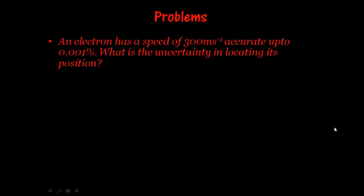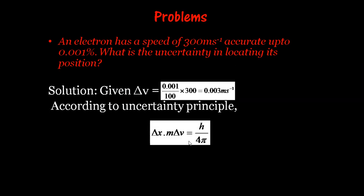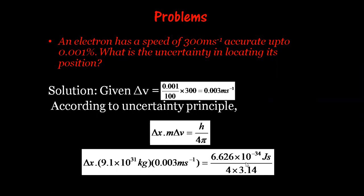Let us solve some problems based on the uncertainty principle. Problem 1: An electron has a speed of 300 m/s accurate up to 0.001%. What is the uncertainty in locating its position? Solution: ΔV = 0.001% of 300 m/s = 0.003 m/s. According to the uncertainty principle, Δx · m·ΔV = h/4π. Substituting all known values, except Δx, we can easily find the value of Δx.